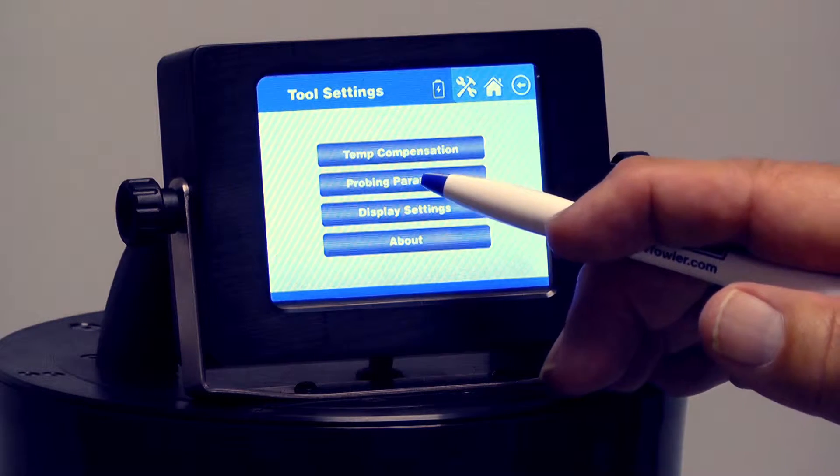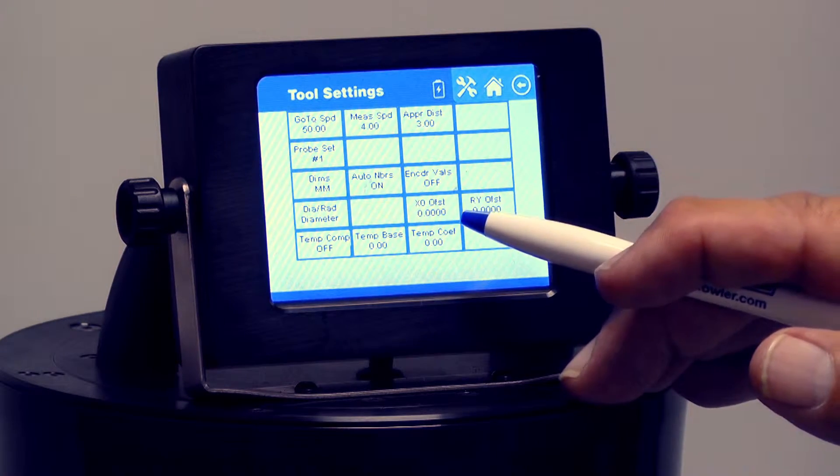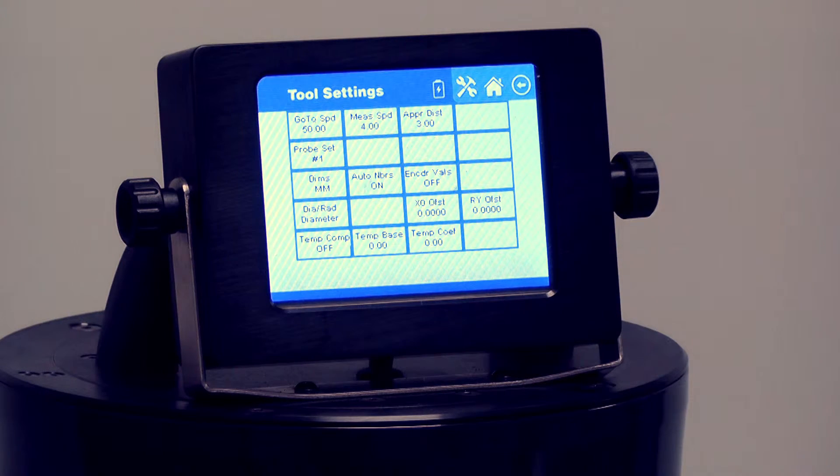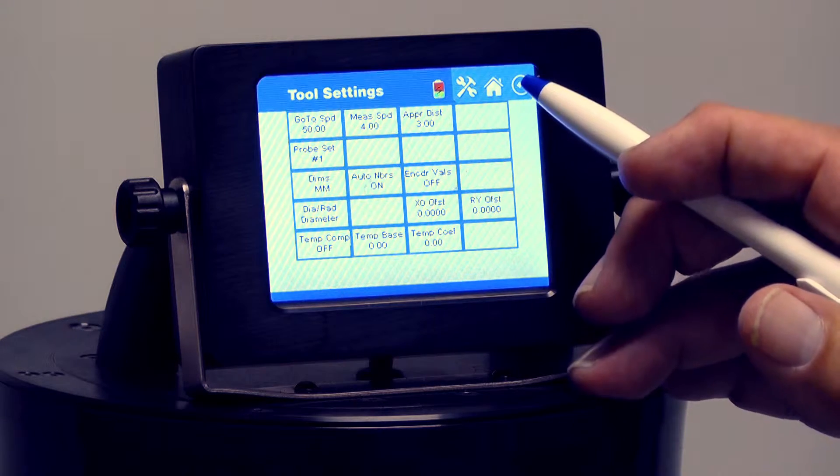Probing parameters: we have one probe setup, this is number one. You could have a second probe setup, that would be probe set number two. We only have the one right now, so I'll go back.